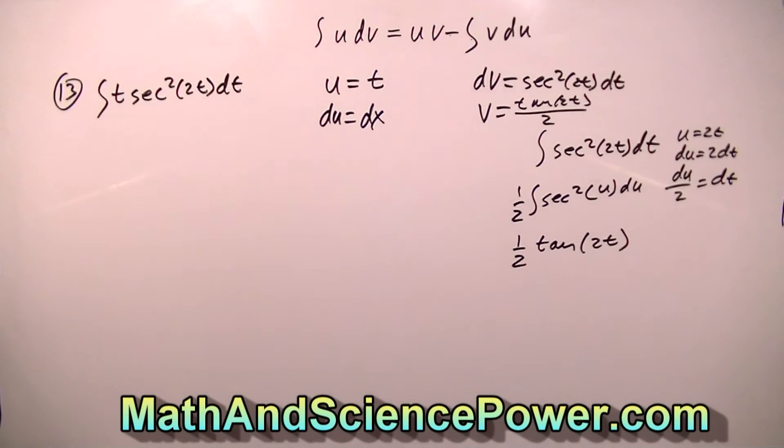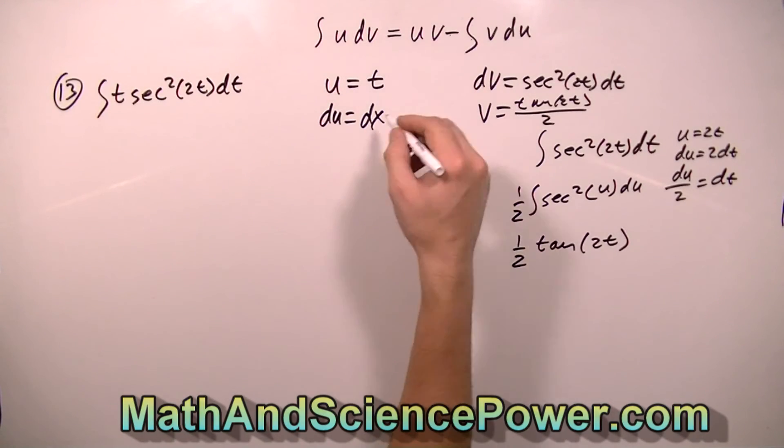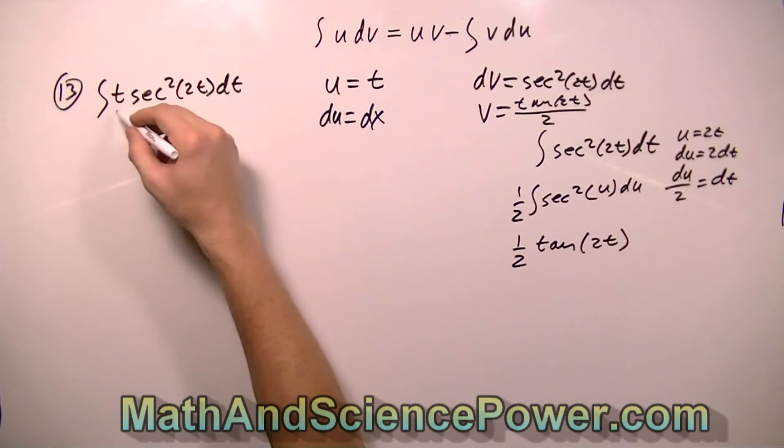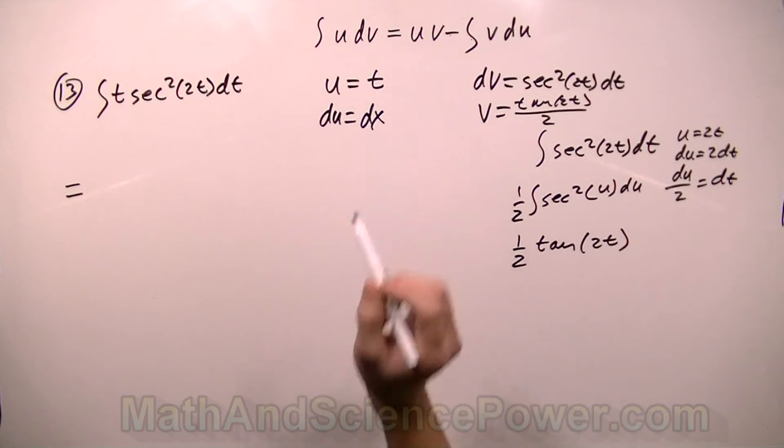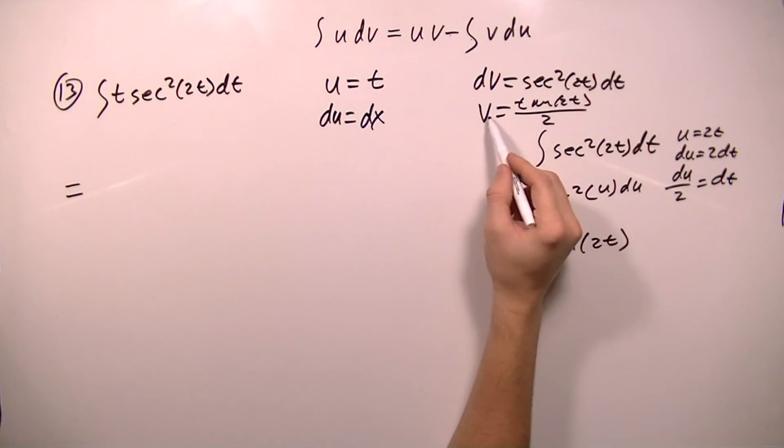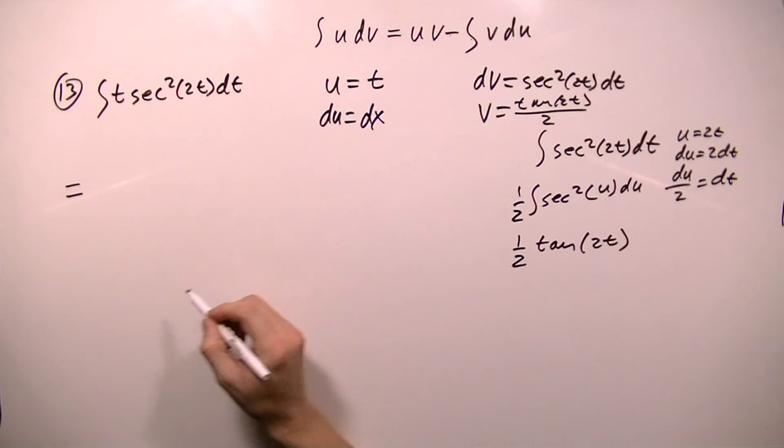Welcome back to MathAndSciencePower.com. Okay, let's plug in our values here. So this integral will equal v times u. So u is t, and v is tangent 2t over 2.